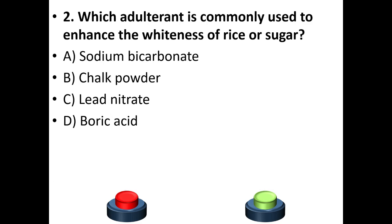Second question: Which adulterant is commonly used to enhance the whiteness of rice or sugar? A. Sodium bicarbonate. B. Chalk powder. C. Lead nitrate. D. Boric acid. Your answer is option B: Chalk powder. Chalk powder and urea are used, but chalk powder is most commonly used.